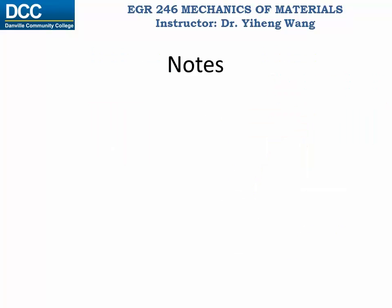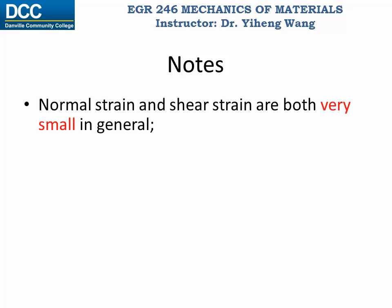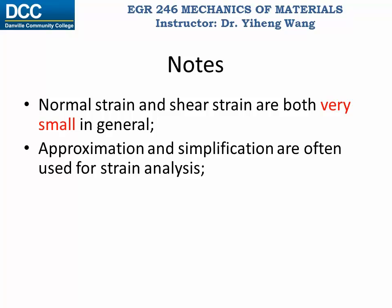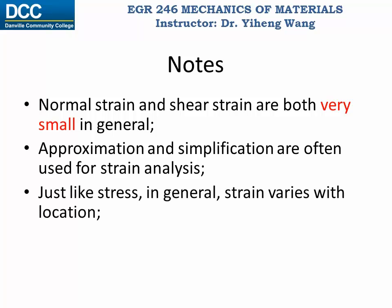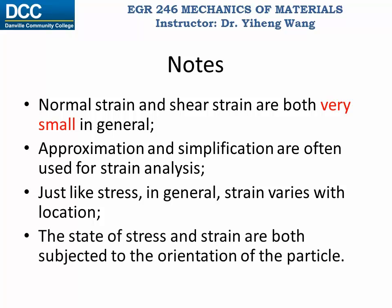Here are several notes. First, as mentioned, normal strain and shear strain are normally very small, on the order of a thousandth, and therefore approximations and simplifications are often used for strain analysis. Just like stress, strain varies with location as well. Both stress and strain are subject to the orientation of the particle. Later in this course we will learn about stress transformation and strain transformation, which enable us to calculate stress and strain at different orientations.